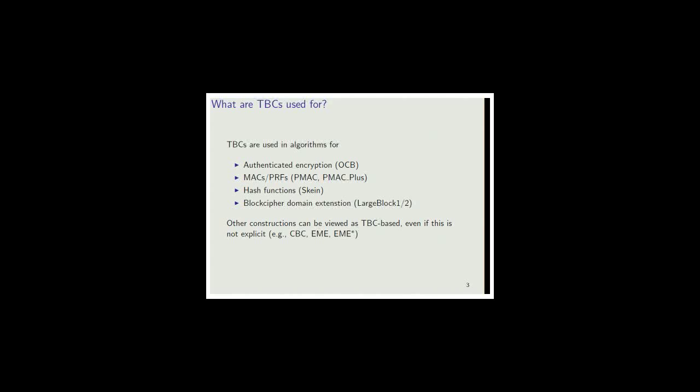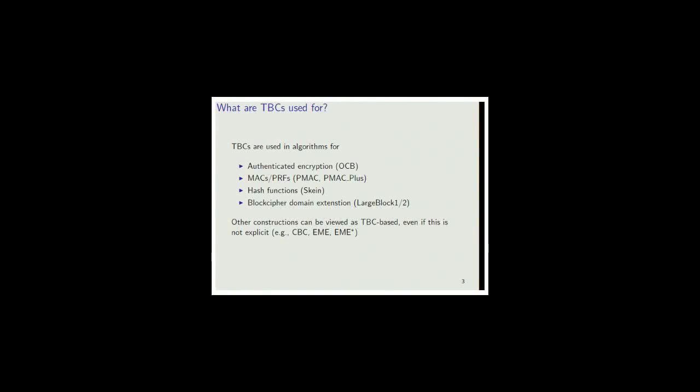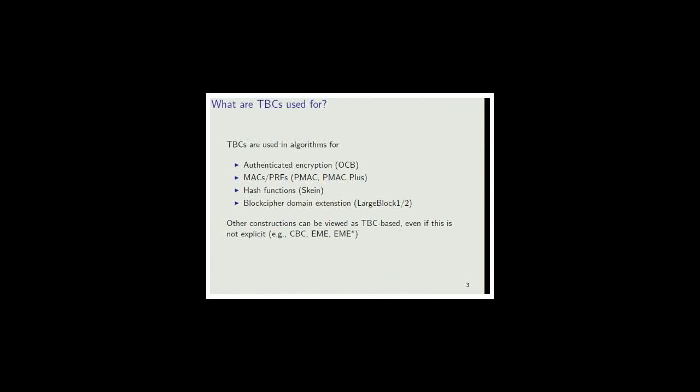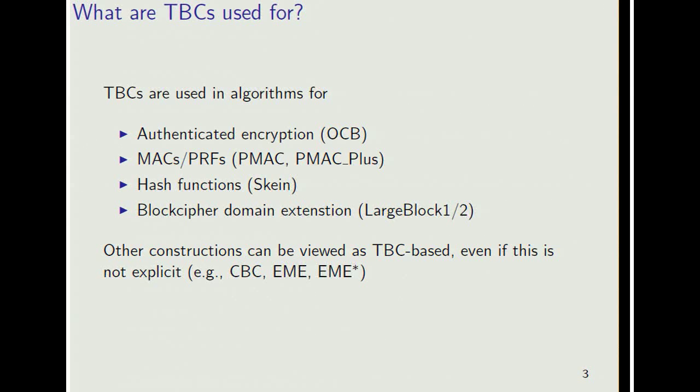In practice, TBCs have been used for a wide variety of things including authentication, authenticated encryption like Rogaway's OCB, MACs and PRFs like PMAC and PMAC+, the Skein hash function which was one of the SHA-3 contenders, and block cipher domain extension constructions. Various other constructions can also be viewed as being built from a tweakable block cipher, even if not cast this way explicitly by the authors. Examples include cipher block chaining, EME, and EME star.